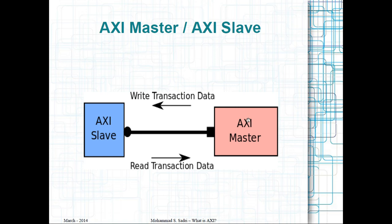In our block diagram representation, we always represent AXI master ports with a rectangle and AXI slave ports with a circle. Here we have one module containing one AXI master port, and one module containing one AXI slave port. The master module initiates transactions — either writes or reads — and the slave module responds. For write transactions, data flows from the master module to the slave; for read transactions, data flows from the slave module to the master.